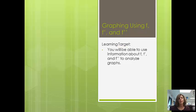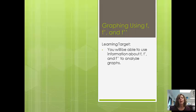Now that we know how to find f prime and f double prime, we can start to analyze graphs and relate them to each other. One of the popular AP questions would be to find, if I knew what f prime was, can you draw a picture of f? Or if you know what f double prime is, can you draw a picture of f? At the end of this lesson, you'll be able to use information about f, f prime, and f double prime to analyze graphs.